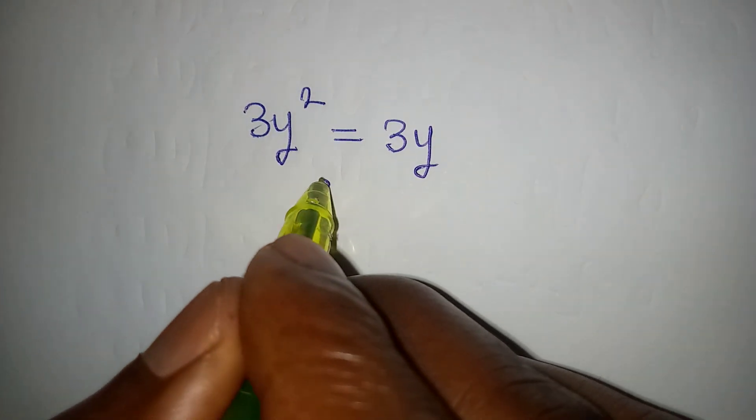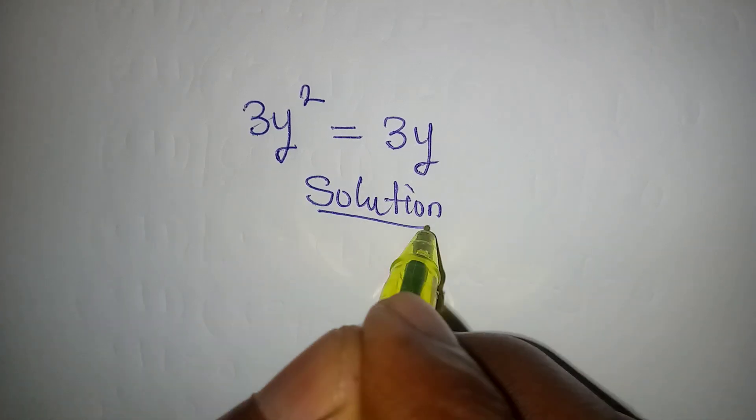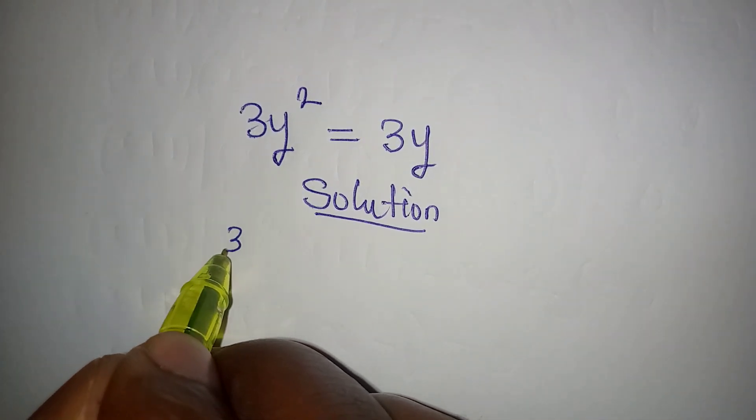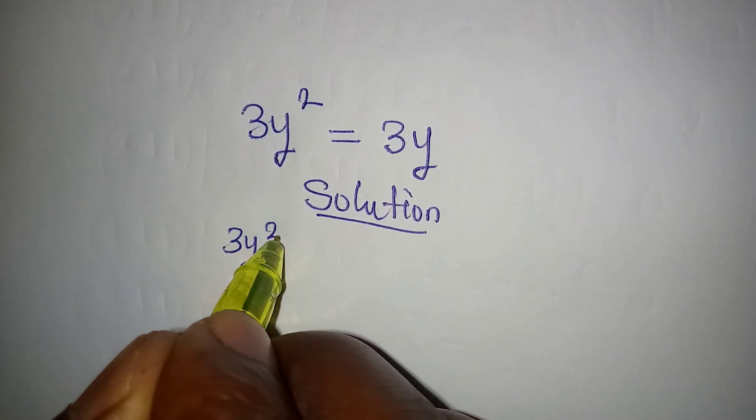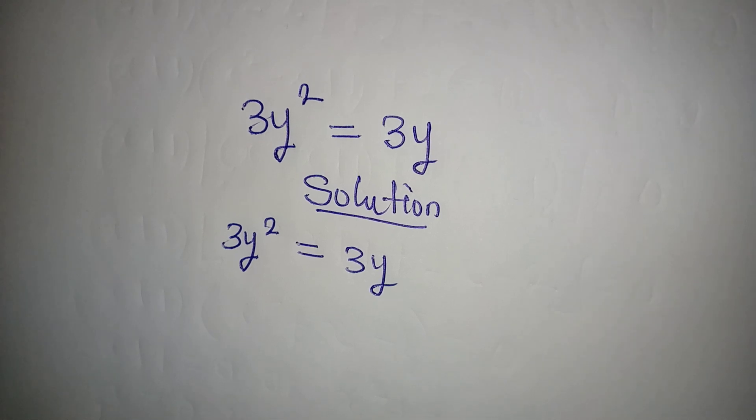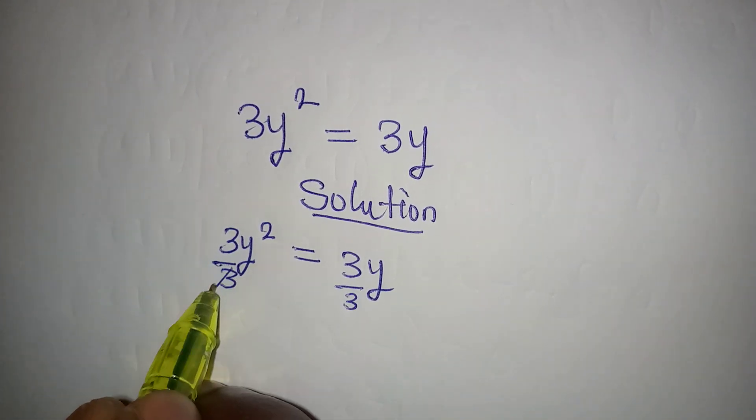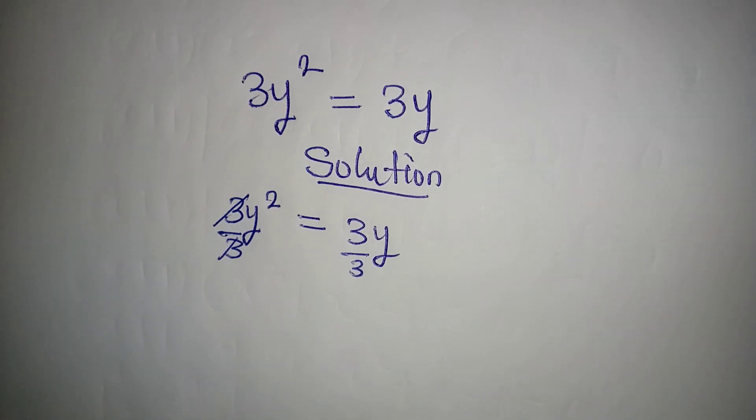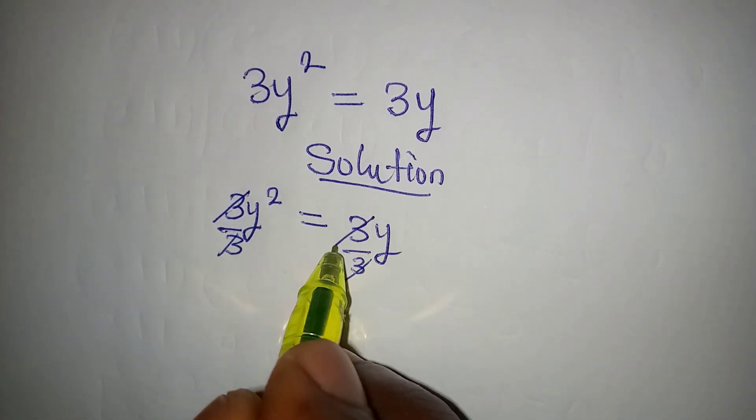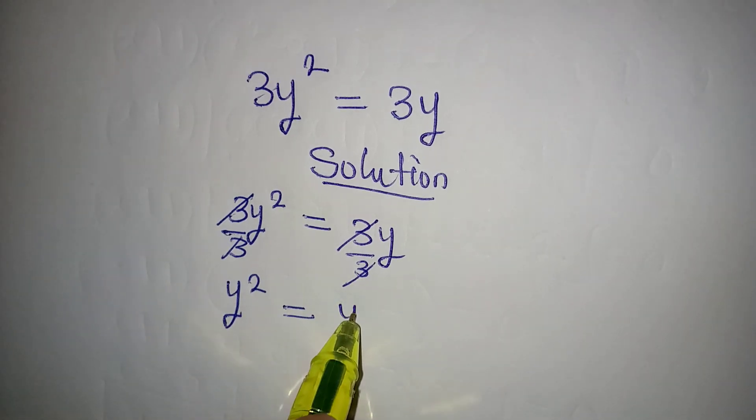Hello everyone, let's provide a solution to this problem. We have 3y squared equal to 3y. This is very simple. What can I do? We can divide this by 3. Divide by 3, this will go with this, and then this will equally go with this. Now y squared is equal to y.